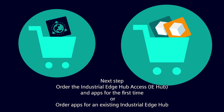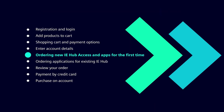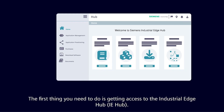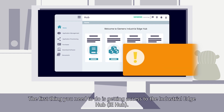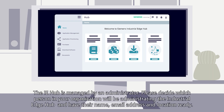Option 1: ordering new IE Hub access and apps for the first time. The first thing you need to do is get access to the Industrial Edge Hub (IE Hub). This is the home of the Industrial Edge app catalog repository — it gives you access to all of your purchased apps. The IE Hub is managed by an administrator.